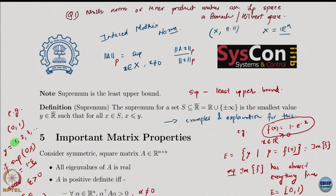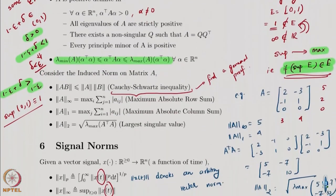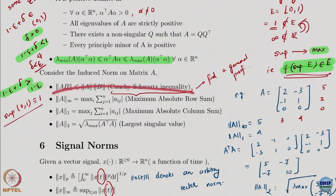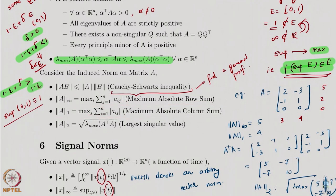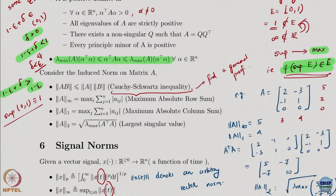This is a very important inequality — very simple but very important — we keep using it regularly in Lyapunov analysis. Please remember this. The expression for matrix norm using supremum is virtually impossible to compute by hand; you would actually have to write some code and do some kind of search or optimization to find the answer. So there are simpler, well-known formulae for particular induced matrix norms.